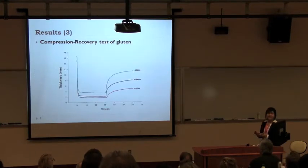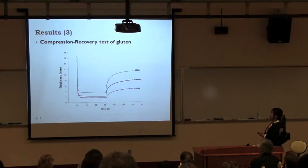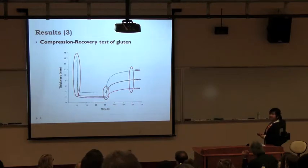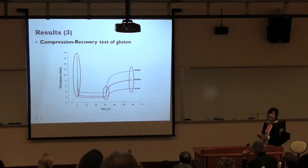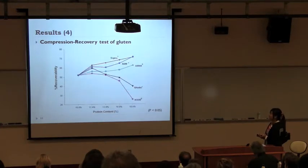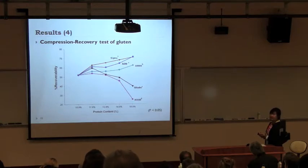This is an example graph of actual testing from the compression recovery test. The percent recoverability is obtained from three factors: the initial thickness of the gluten, the ending thickness when it is compressed, and the final thickness when the force is released and recovery occurs. The percent recoverability is then calculated from these values. This is the result of the percent recoverability as a function of protein content for the compression recovery test.